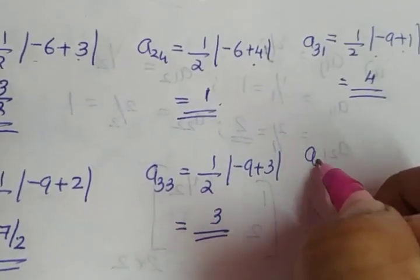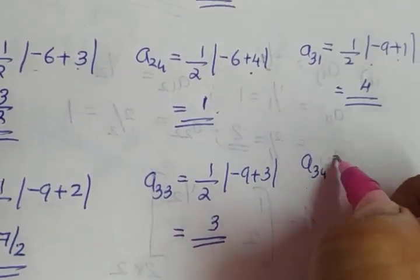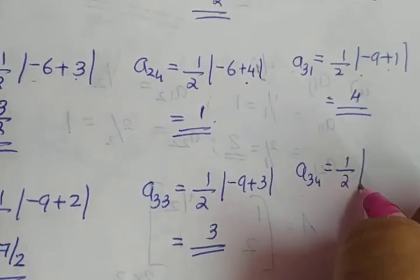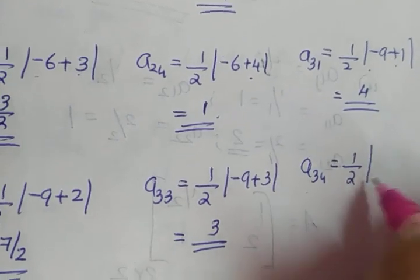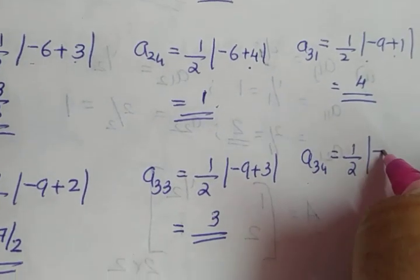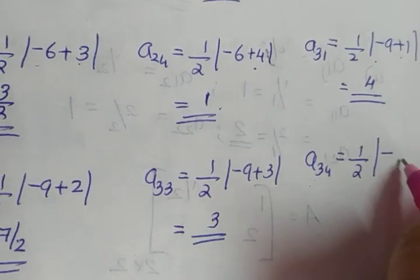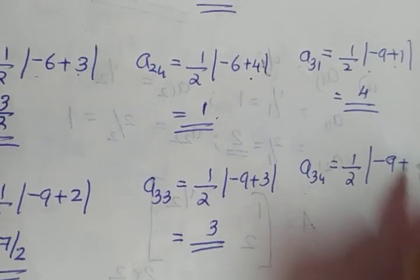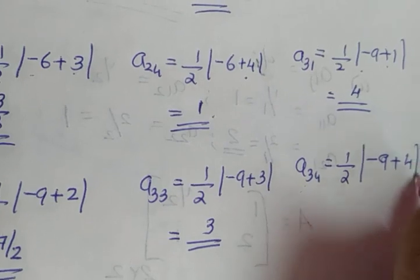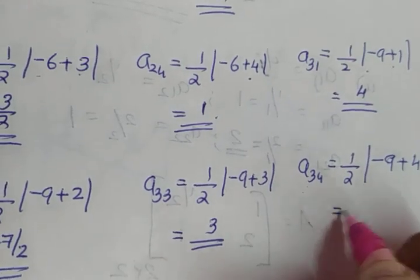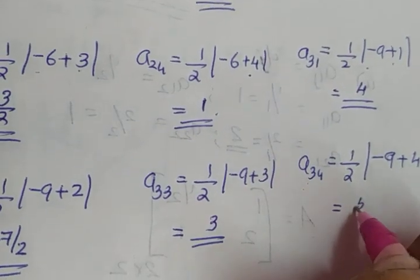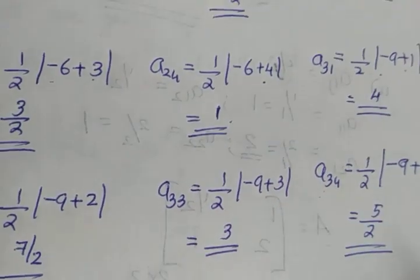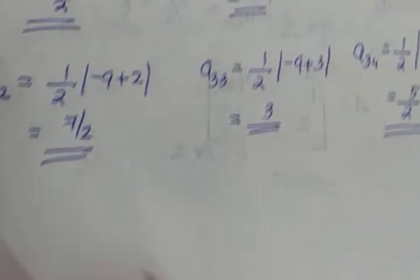And the last element, A34 is equal to half into modulus of minus 3 into 3 plus 4, which gives minus 9 plus 4 equal to minus 5. Modulus is 5, and 1 by 2 into 5 gives you 5 by 2.